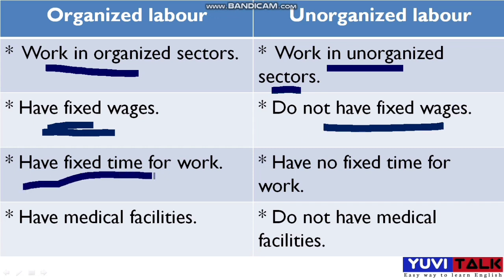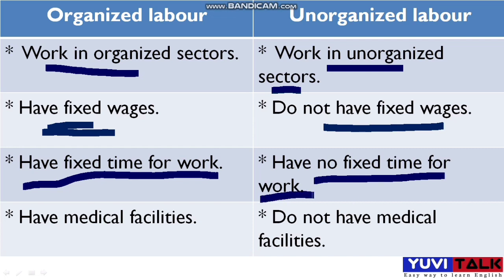The third difference is that Organized Labor has a fixed time for work, like 10 to 5, while Unorganized Labor has no fixed time — they sometimes work more and sometimes less. The fourth difference is that Organized Labor has medical facilities available, while Unorganized Labor does not have medical facilities.